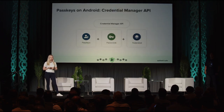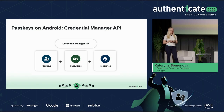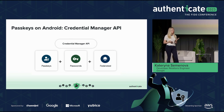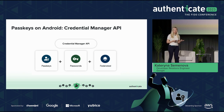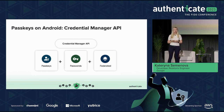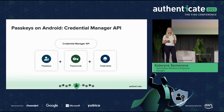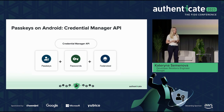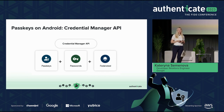Previously on Android, there were lots of different APIs that supported authentication — for example, one-tap sign-in, sign-in with Google, Smart Lock for passwords, and many others. We were thinking about how to introduce PassKeys through what API, and how users can transition seamlessly from passwords to PassKeys, while simplifying developers' lives with one library that supports different kinds of APIs.